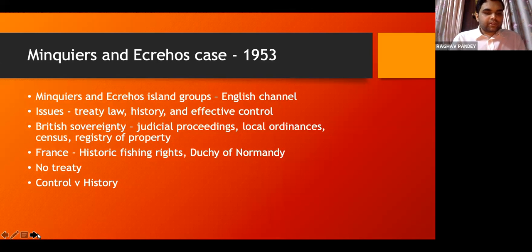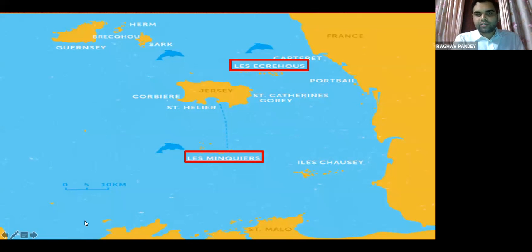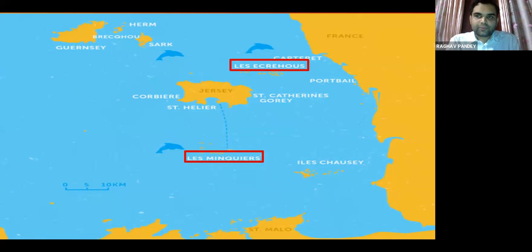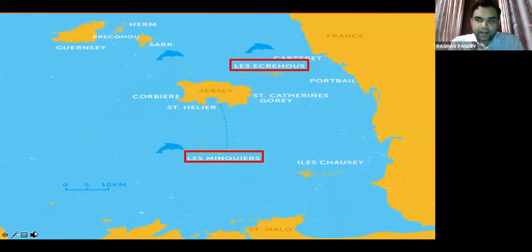Jersey is a British Island relatively far from the British mainland, while these islands are very near to France. It could easily be argued that France should be given these islands because of proximity — they are very near to the French coast and the French had been fishing around them. France had a very decent claim, but since the British had control over these islands, the courts gave it to the British side.